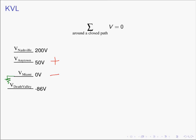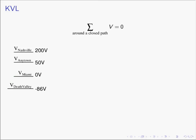So remember, this could be something like ground. We have a voltage which is 50 volts — Anytown with respect to ground, which is also Miami. This is a voltage which is 200 volts above our reference. And here we have a voltage which is negative 86 above our reference, or that is, it's 86 volts below the reference. So let's do an example and take a charged particle.